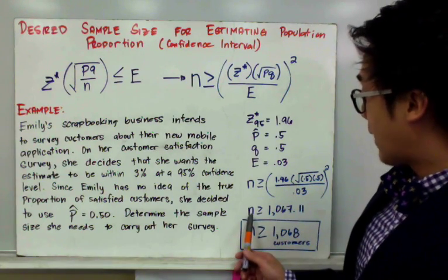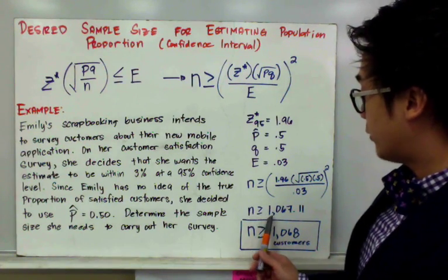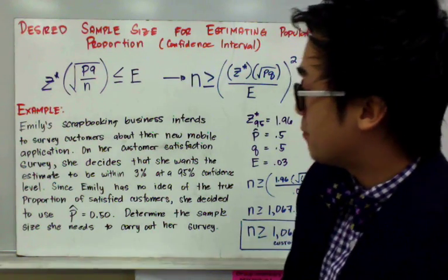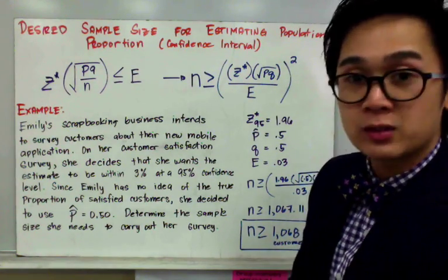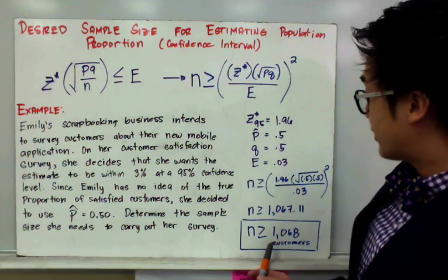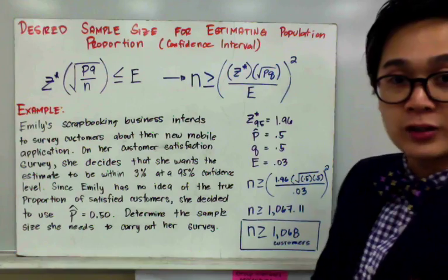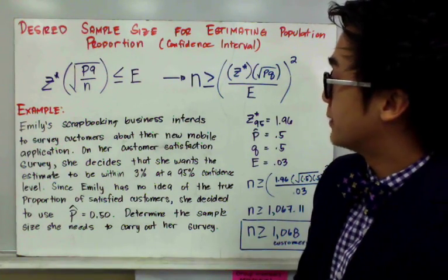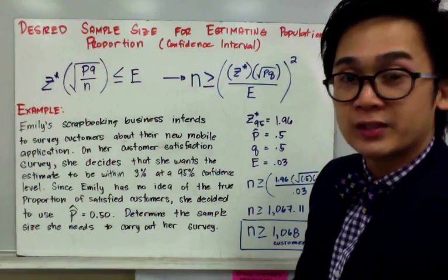which gives us N greater than or equal to 1,067.11. So Emily's minimum sample size that she will need for her survey will be 1,068 customers. And that's how we find our minimum sample size at a given confidence level.